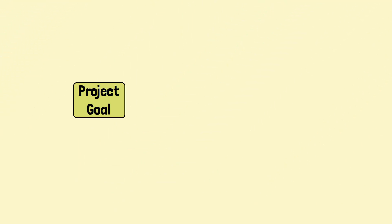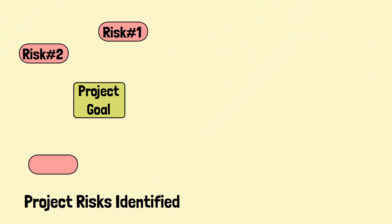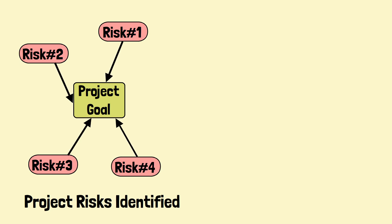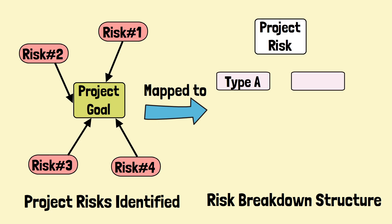Similarly, risk data can be structured and organized in a standard manner to facilitate risk understanding and communication. A risk breakdown structure, or RBS, is a hierarchical representation of the risks associated with a project.